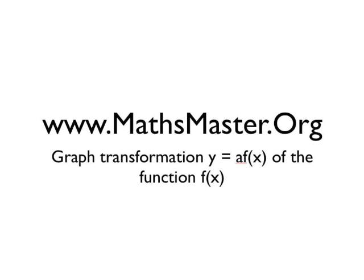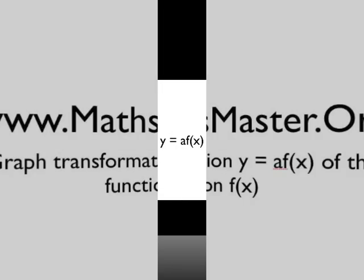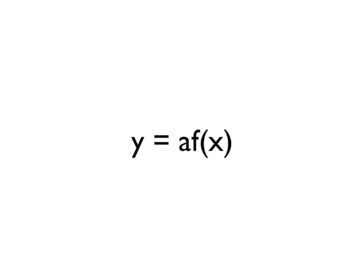Welcome to MathsMaster.org. We're going to have a look at the graph transformation y equals a times f of x. In this lesson, we're going to look at taking a function of x and multiplying that by a constant term, which I'm going to use 'a' to stand for. Then you take that new function, a times f of x, and plot it on a graph, and look at what happens to the graph when the value of a changes.